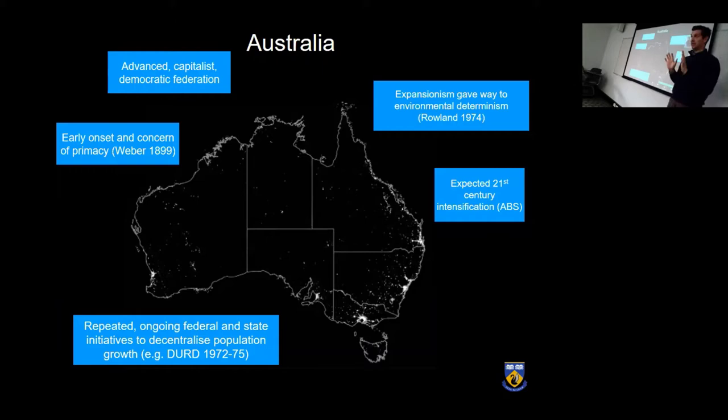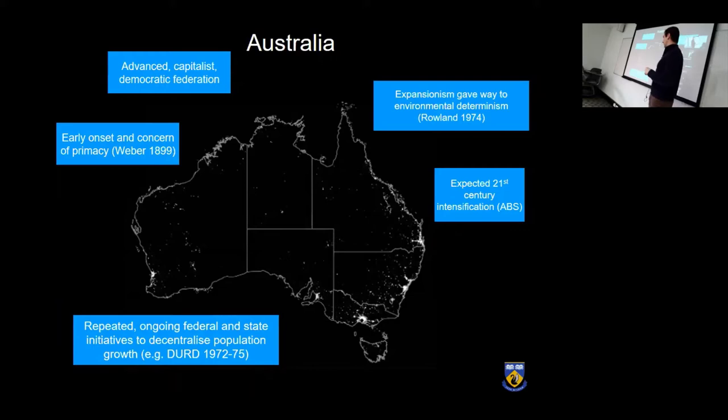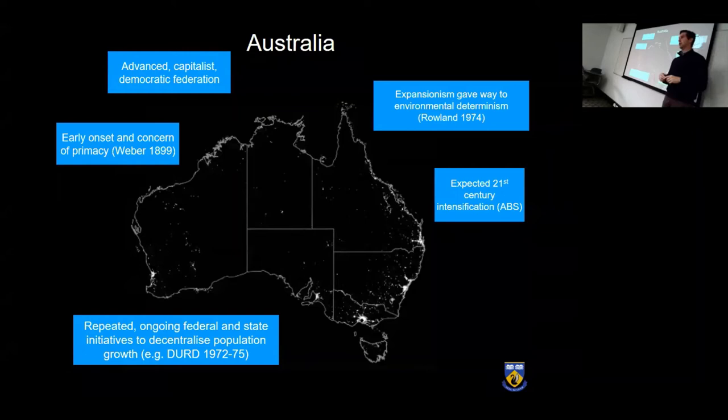Those ABS projections were made before COVID, so they may change slightly. In general, there has been repeated and ongoing federal and state interest in decentralizing population growth. In my historical literature review, you'll find every decade or so there's a debate and sometimes proper programs to move people out of the capitals and into non-capital cities. One notable example is DURD — the Department of Urban and Regional Development — established in the 1970s, one of the more earnest efforts to grow non-capital cities in Australia, though it had a short life.